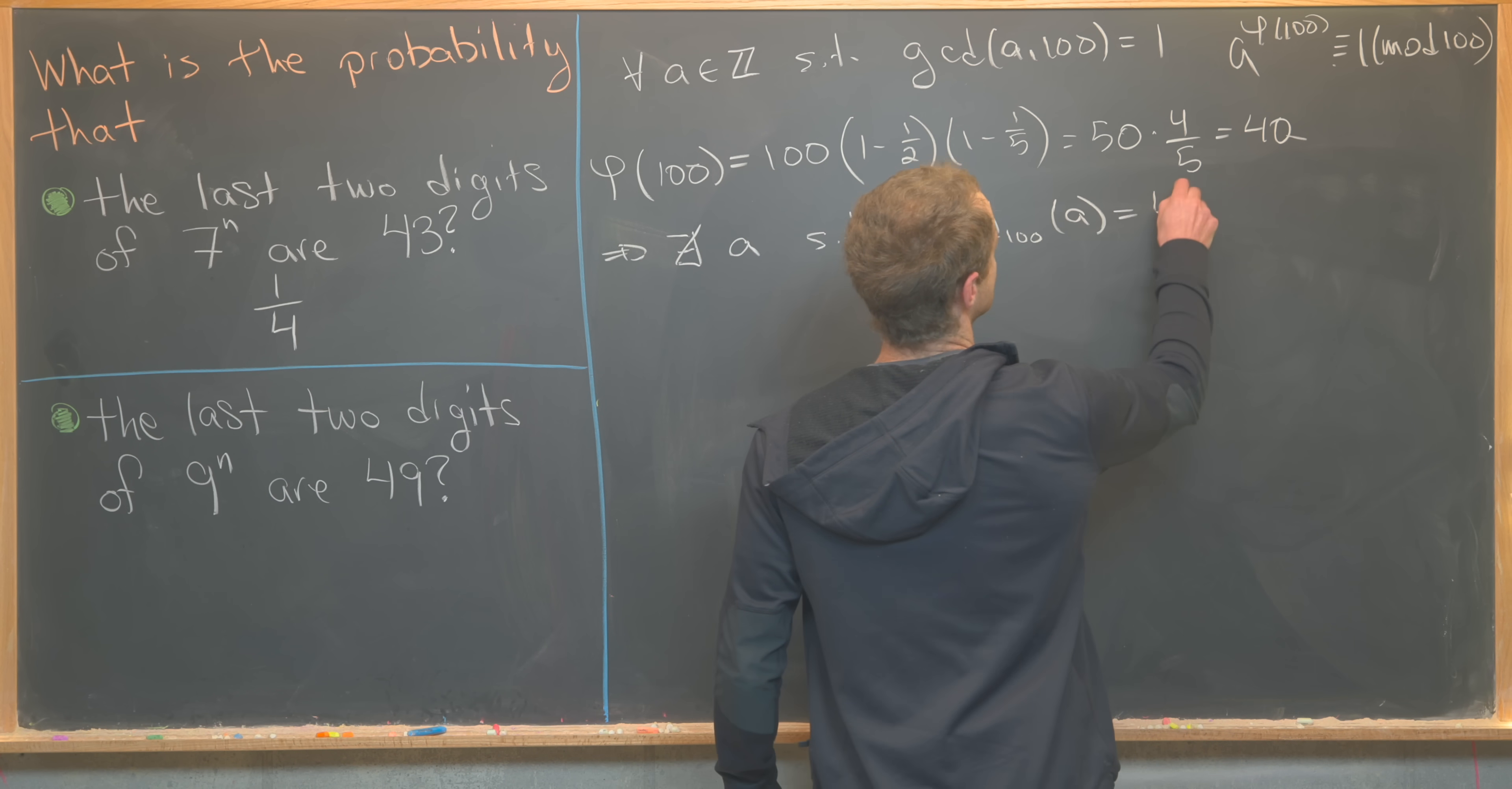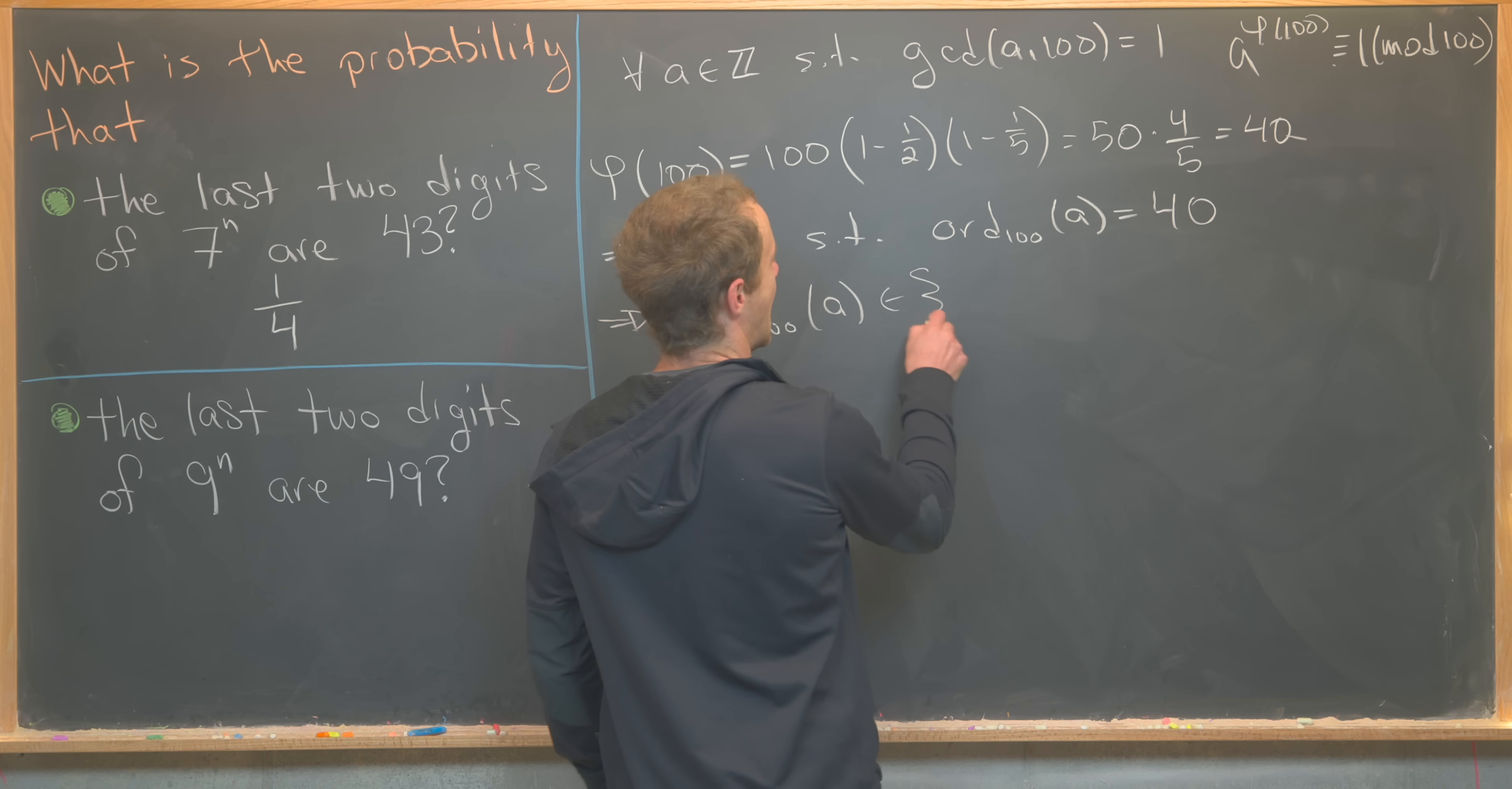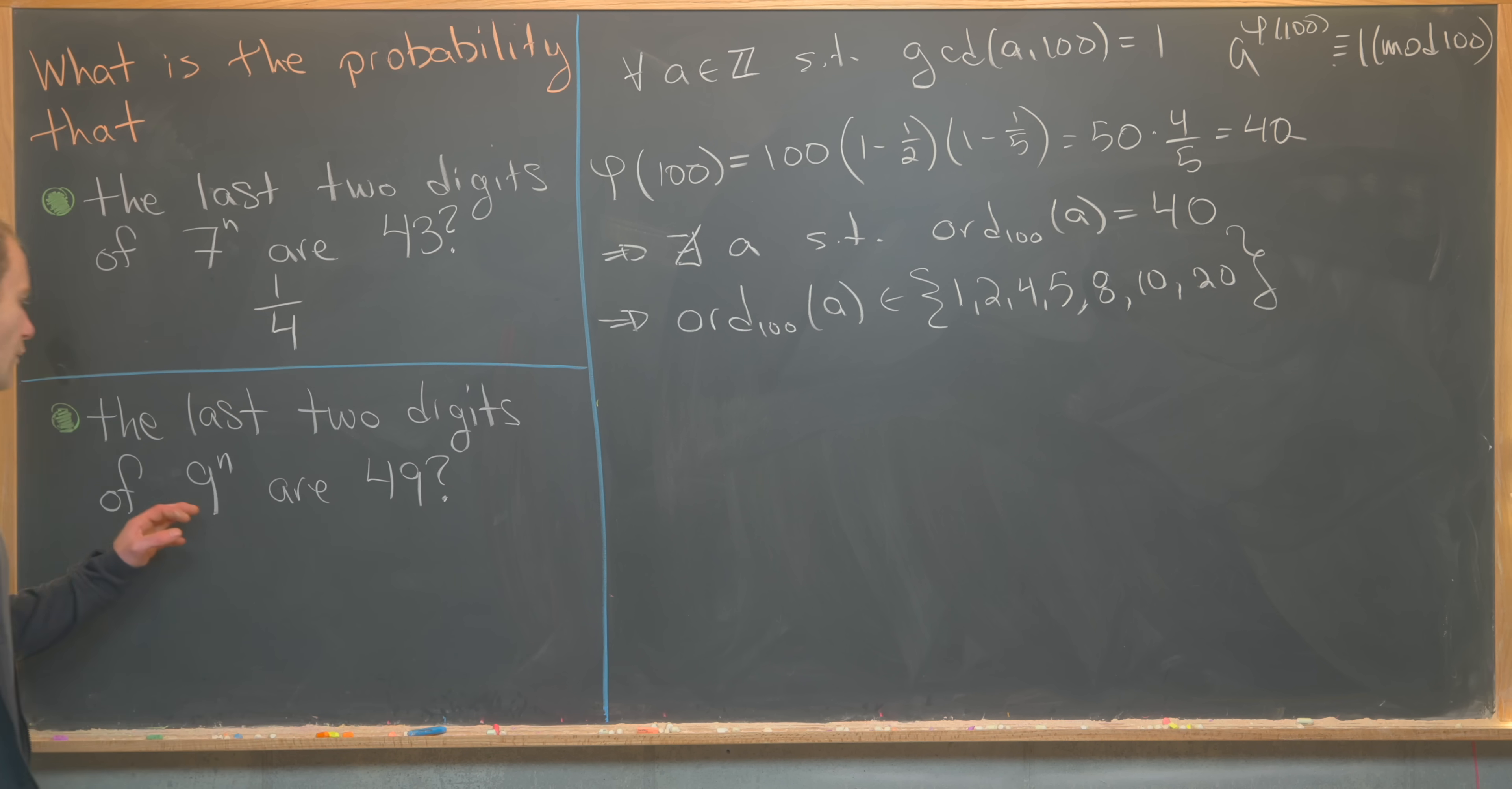So what that tells us is that there do not exist any numbers a such that the order mod 100 of a equals 40. But what that tells us, along with a proposition on the previous board, is that the order mod 100 of a has to lie in a set of divisors of 40, not including 40. So that means it can be 1, 2, 4, 5, 8, 10, or 20.